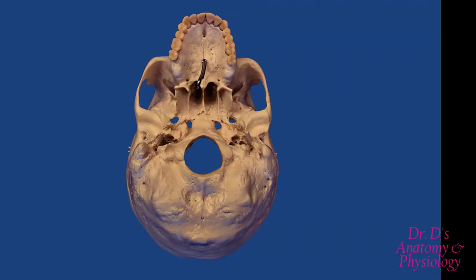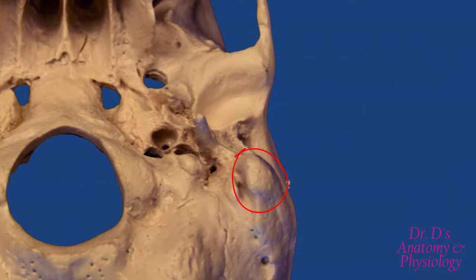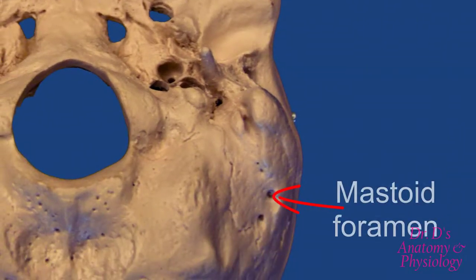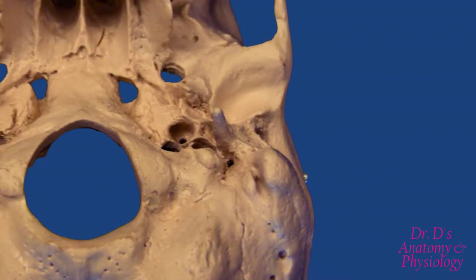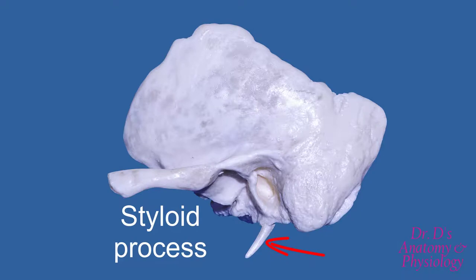If you look at the mastoid process from below, you'll find associated with it the mastoid foramen. Interior to the mastoid process, you'll find a slender process referred to as the styloid process. This word styloid comes from its resemblance to a stake or a spine — anything long and slender. The styloid process is an important process because it is the attachment for a number of important muscles that control the tongue, the larynx, the pharynx, and you have ligaments that attach to the hyoid bone.